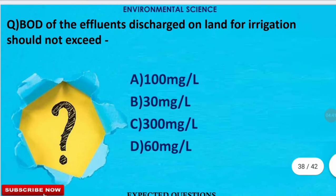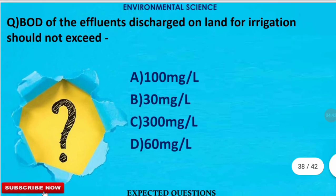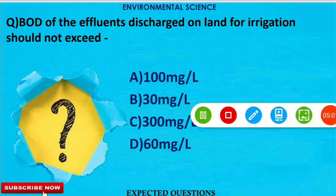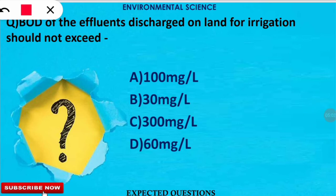The next question is on water pollution: the biochemical oxygen demand (BOD) of effluents discharged on land for irrigation should not exceed which level? The correct option is B — BOD should not exceed 30 milligrams per liter for land irrigation.